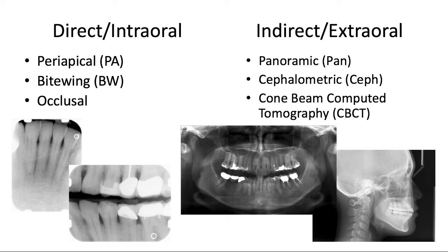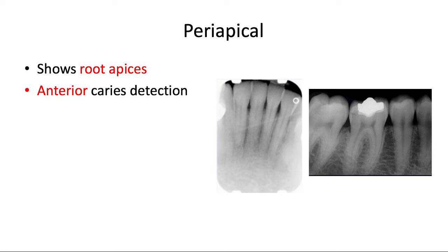We're going to start with the periapical. Periapicals are used to capture the roots of the teeth, including their apices, enabling you to look for manifestations of pulpal or periodontal disease. A periapical radiolucency — a dark spot at the root apex — is a good sign of an endodontic condition. They're also used almost exclusively for detecting radiographic caries in the anterior region. Notice how periapicals are positioned vertically in the anterior and horizontally in the posterior, for the most ideal capture of root apices.